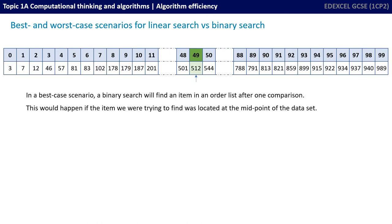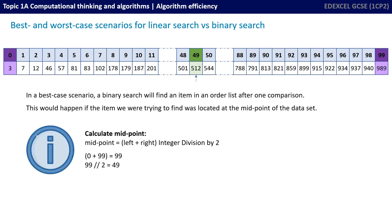Now let's think about a binary search, starting with best-case. In a best-case scenario, a binary search finds an item after just one comparison, if the item is located at the midpoint of the dataset. The fundamental concept is we start by looking at the mid value, calculated by taking the left pointer plus the right pointer and doing integer division by 2: 0 plus 99 equals 99, integer division by 2 gives us index 49. If the value is found we stop; if not, we discard half the list and carry on.